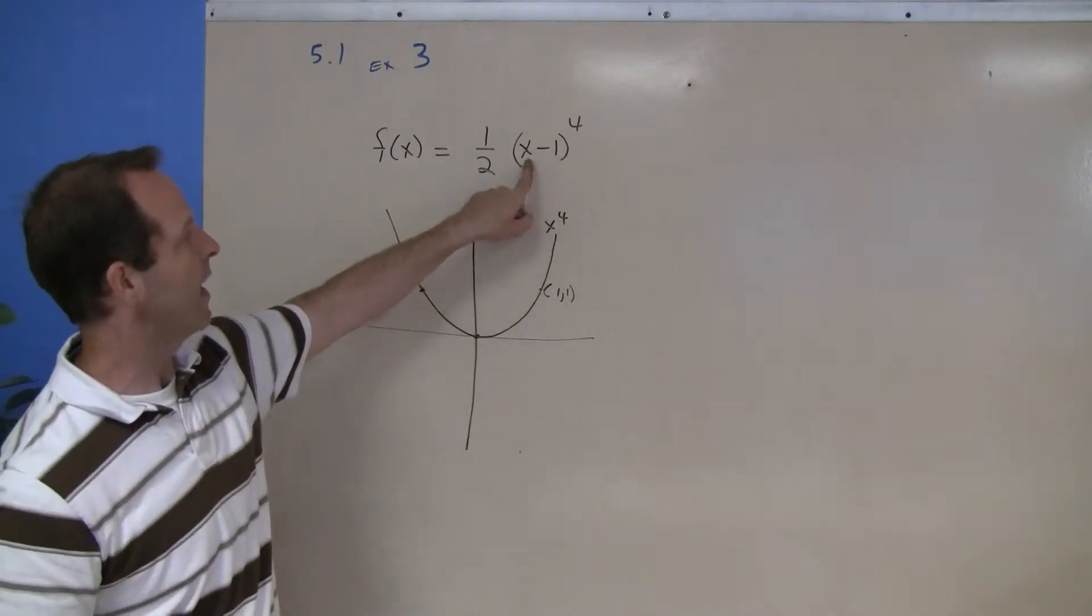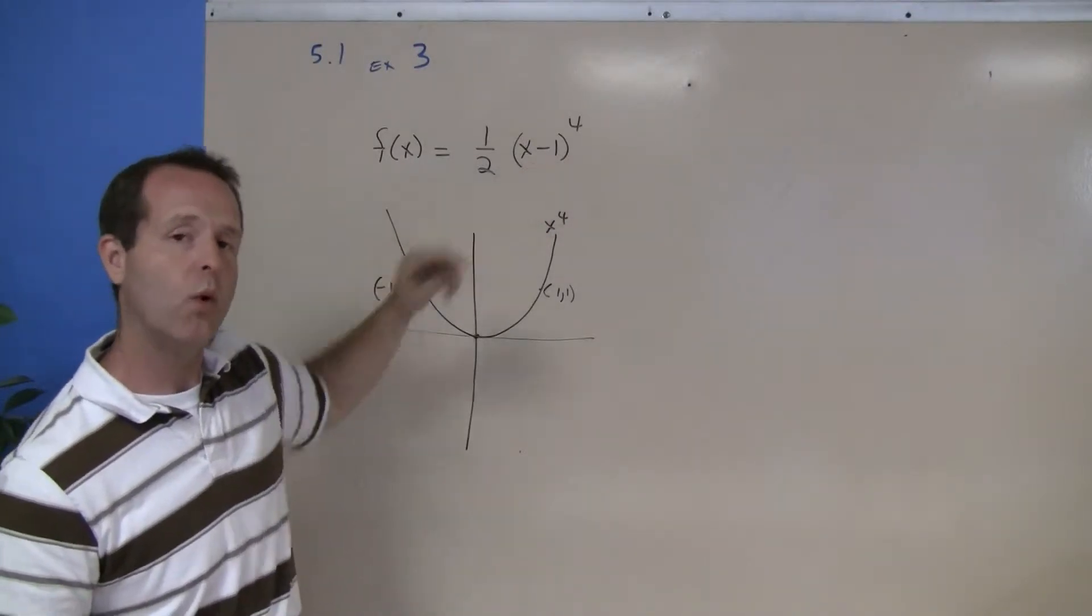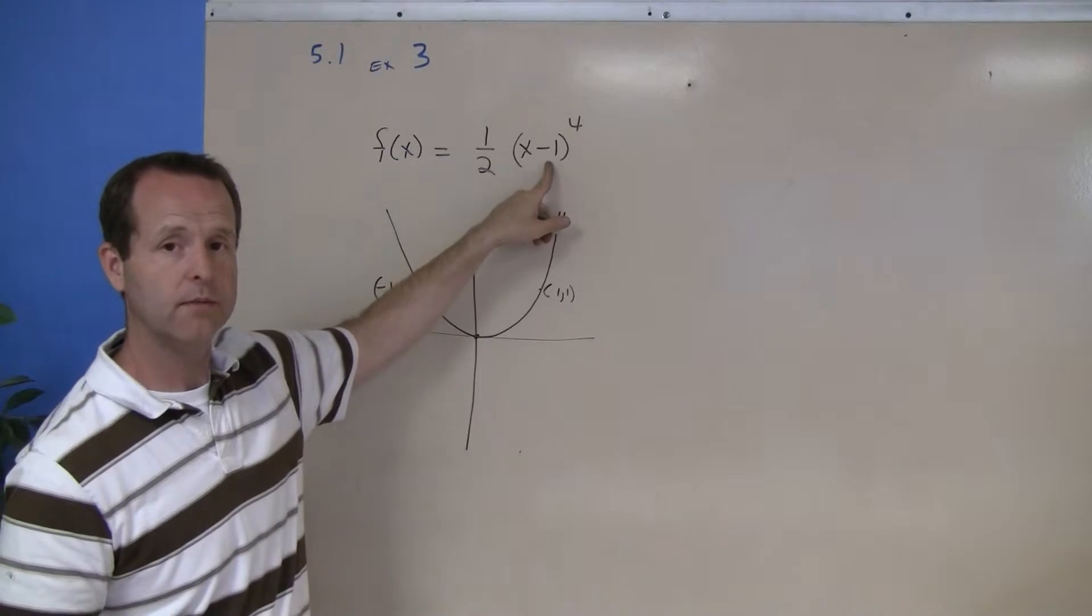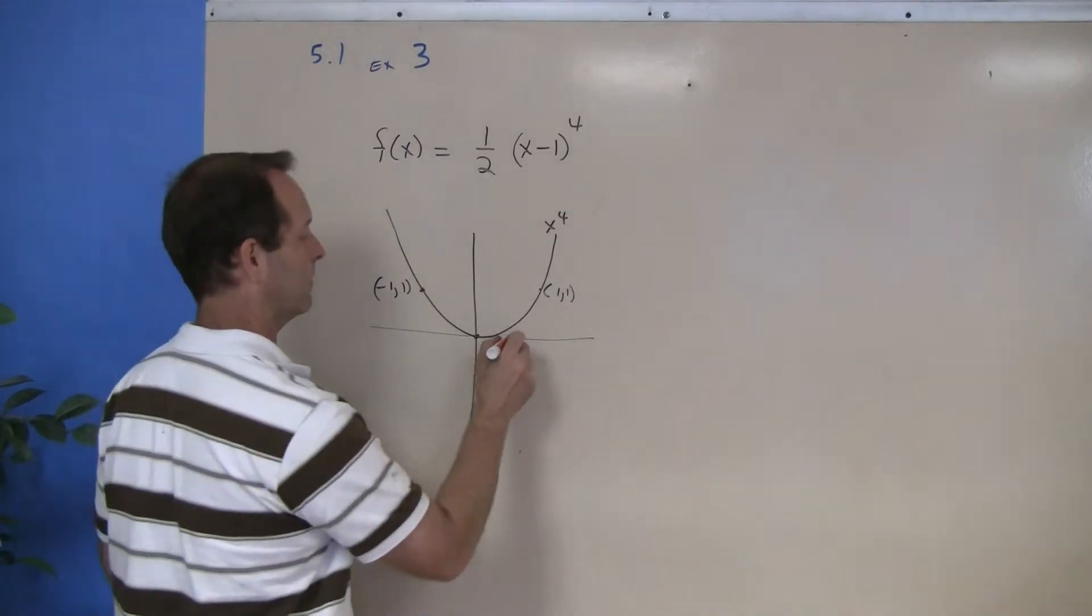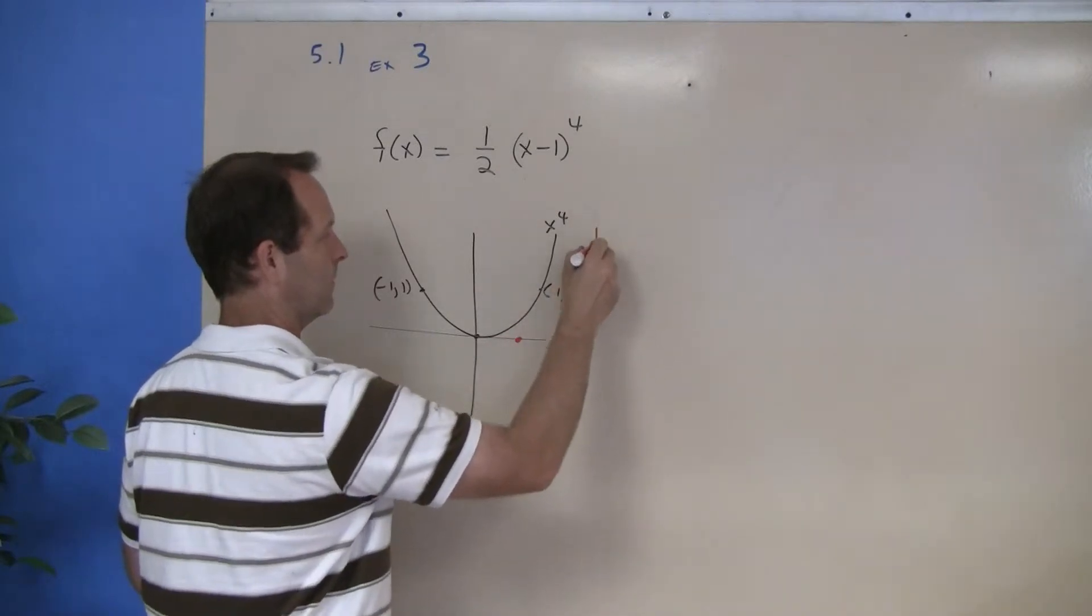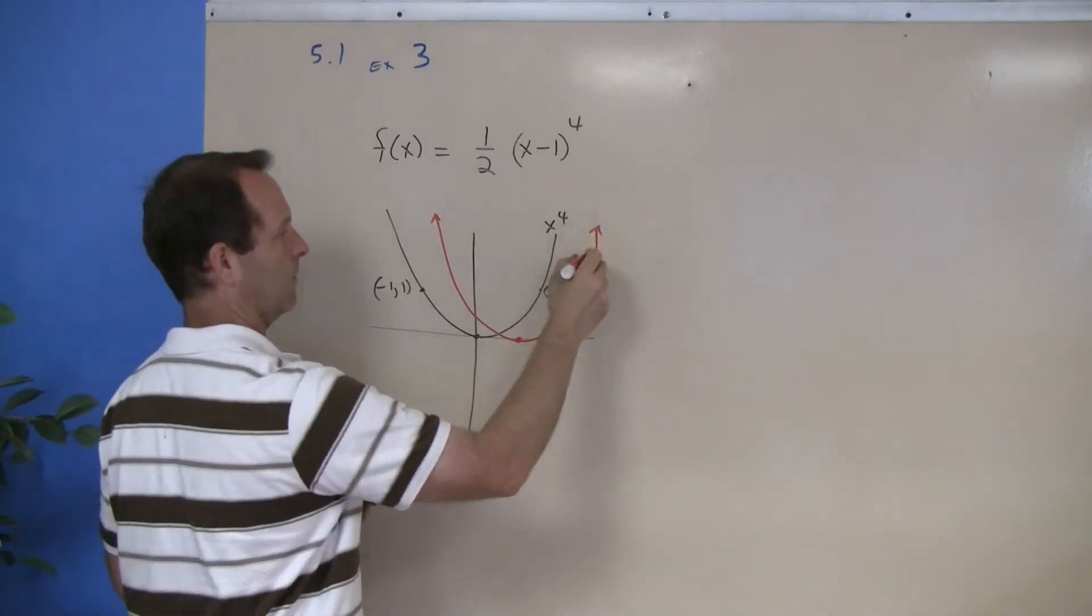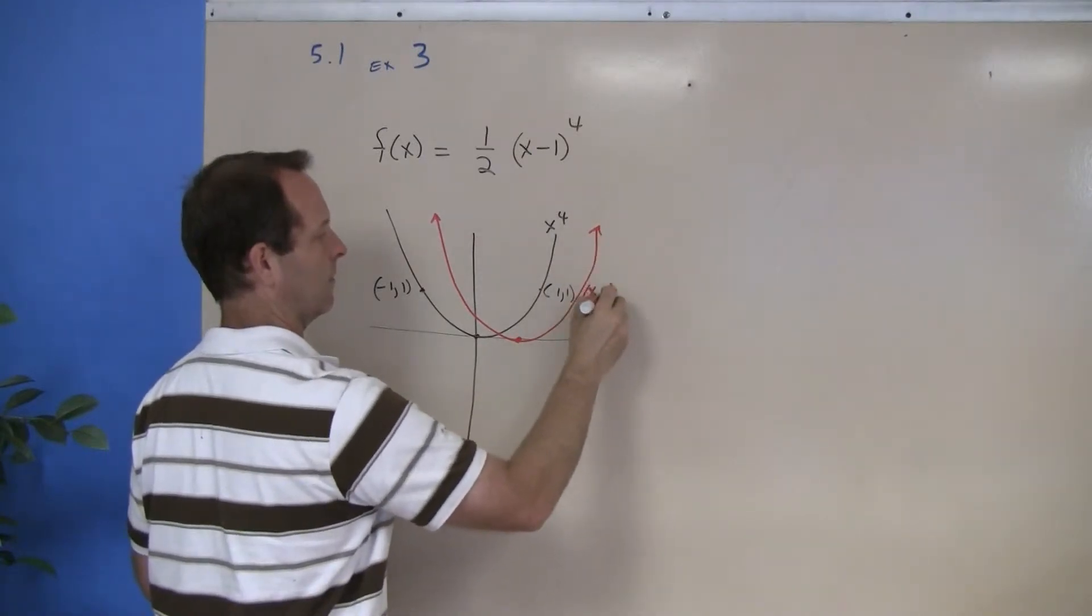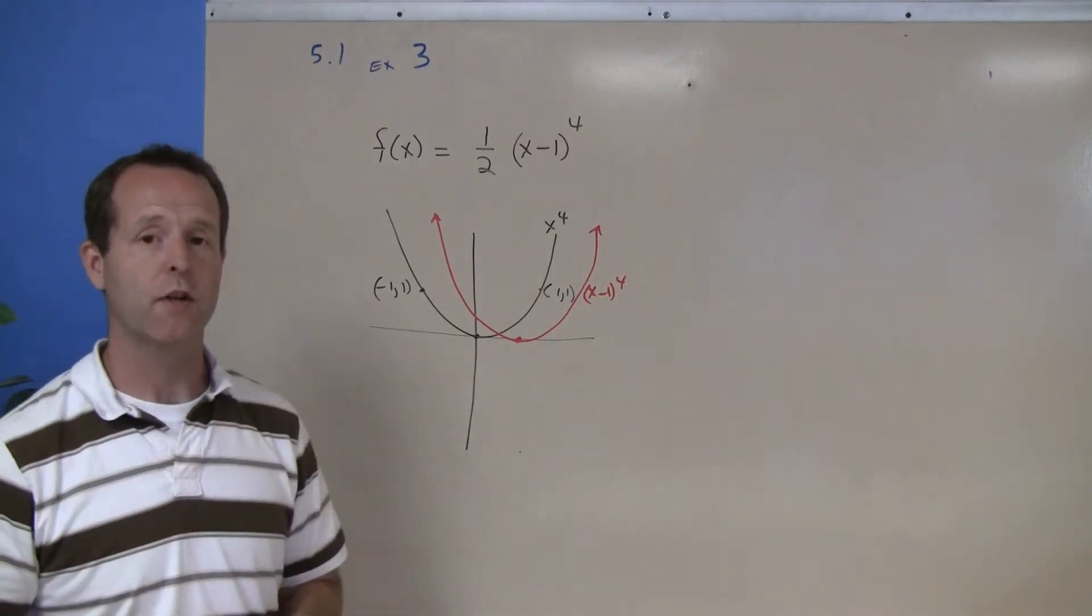The next part: inside this bracket I have (x - 1) to the fourth. What does that negative 1 right here do? Well, it shifts the entire graph over one spot to the right. So there's (x - 1) to the fourth.